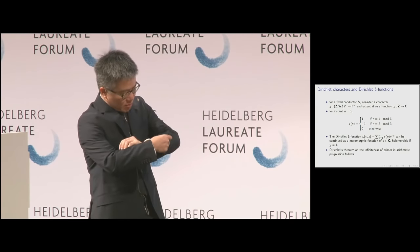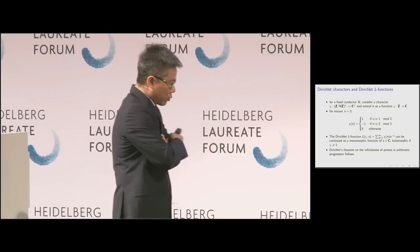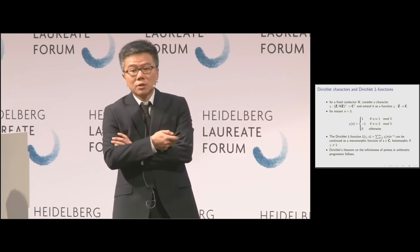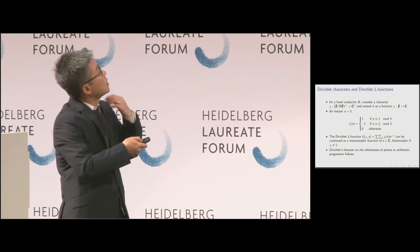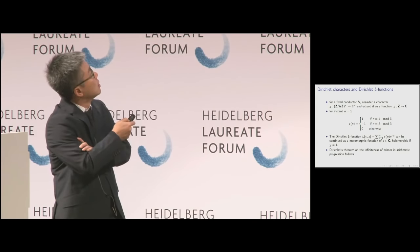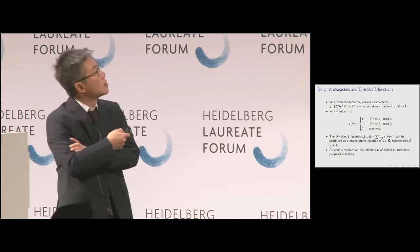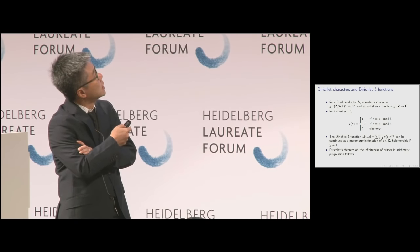One basic example that arose at more or less the same time as Riemann is Dirichlet L-functions. These are very similar, but we have some extra data. You start with a conductor N, a natural number, and you are given a character of the multiplicative group Z mod N to C*. Let's take the example N equals 3.